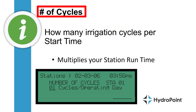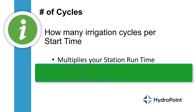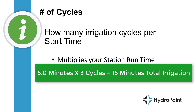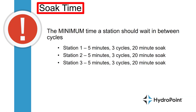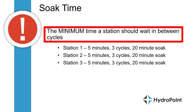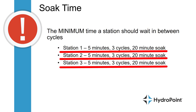Next, you'll program in the number of cycles, which is the number of irrigation cycles per start time. So if you program a station with a run time of 5 minutes and a number of cycles of 3, your total station run time for that start time will be 15 minutes, delivered in 3 cycles of 5 minutes apiece. The user-defined soak time is the minimum time a station should wait in between its programmed cycles.